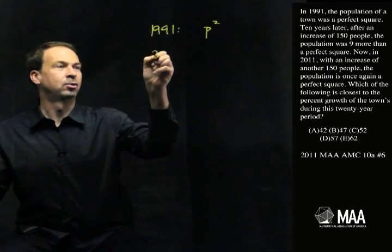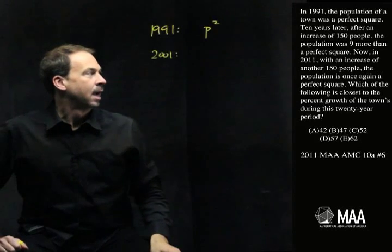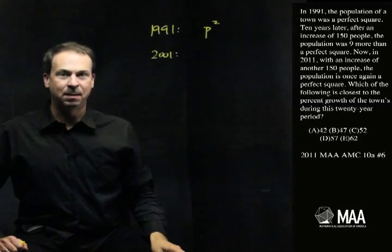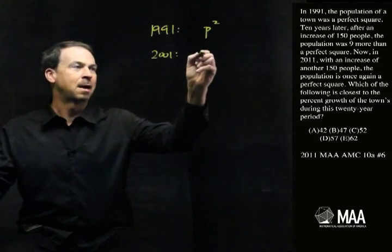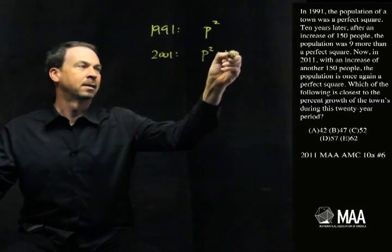Then 10 years later, was that 2001, with an increase of 150 people. All right. Town's population went up 150 people. So it's now P squared plus 150.